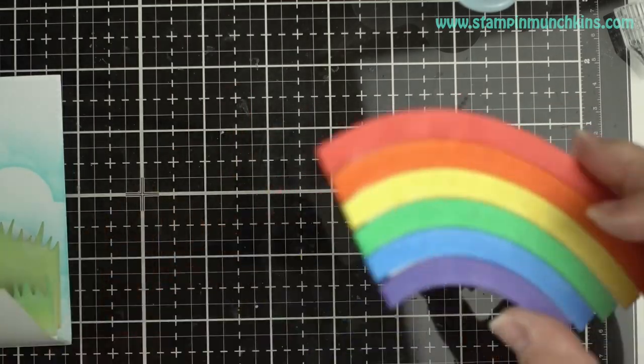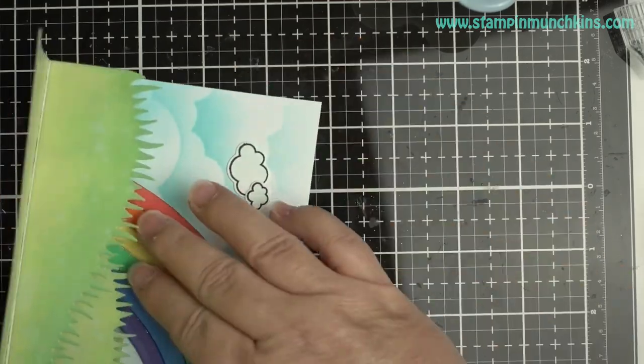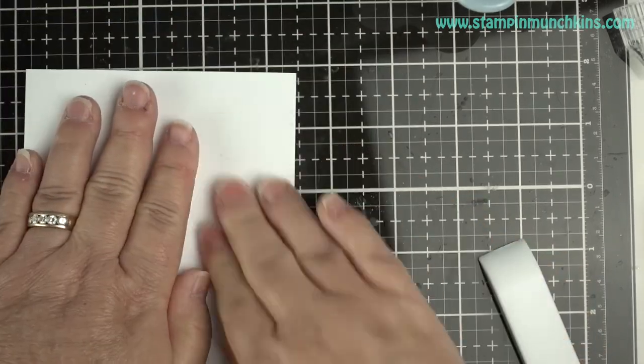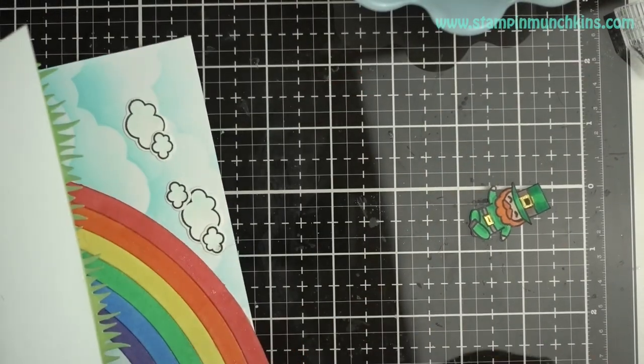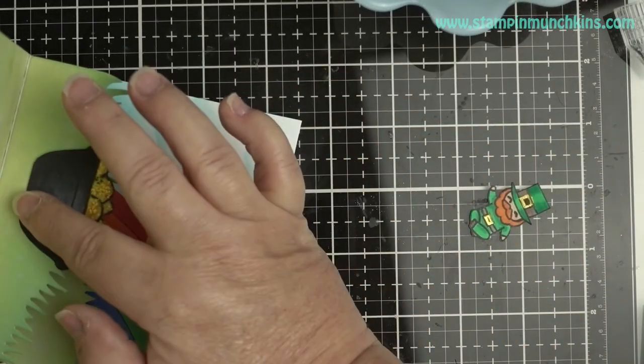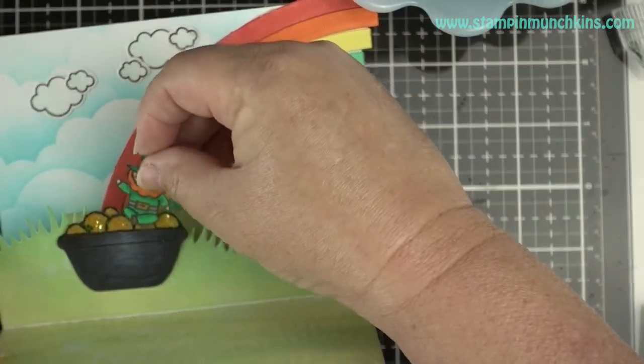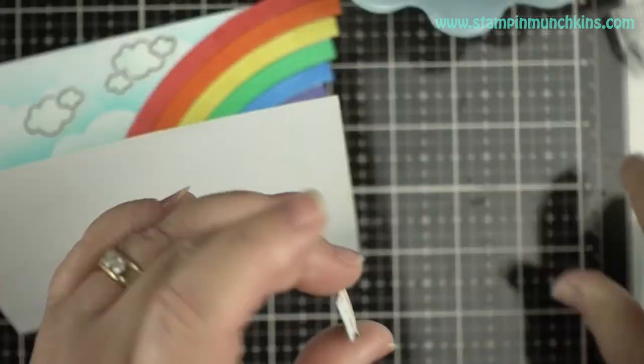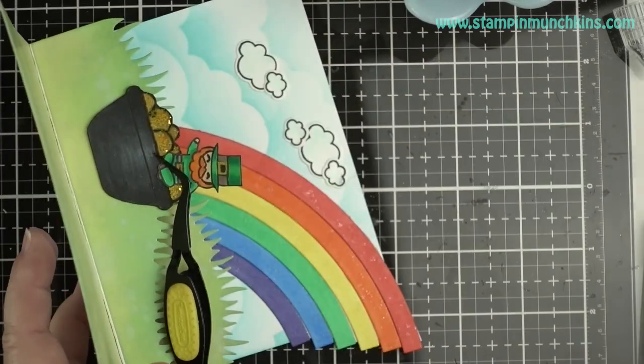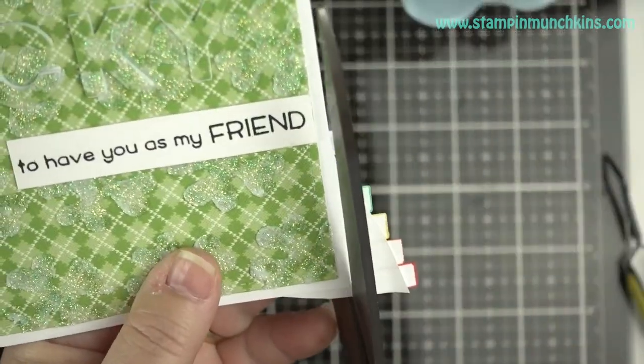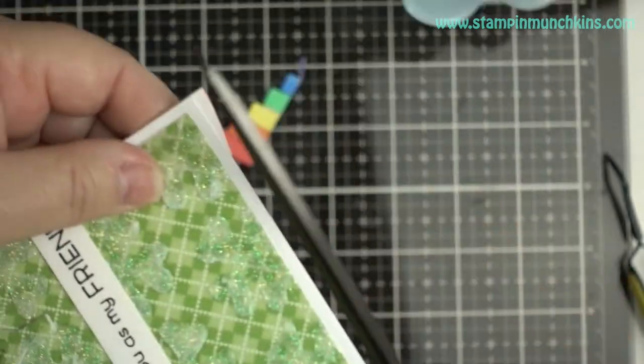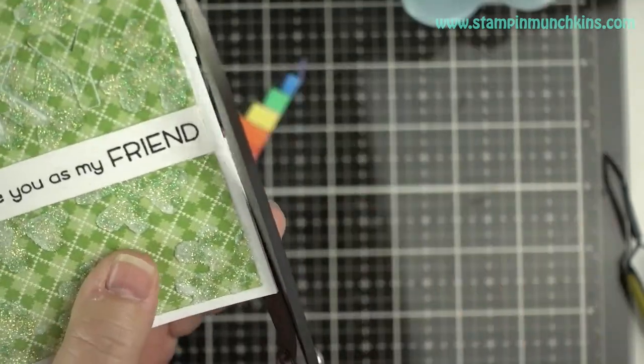And there it is, perfect. There's big clouds on the background and puffy clouds on top. Now I'm just putting the rainbow where I want it to go - it doesn't have to go all the way down. I'm putting my Teflon bone folder in there to make sure it has good contact to the back of the panel. I didn't show but I put Stickles on the gold coins so they sparkle more. This cute leprechaun is sitting on top of his pot of gold. It's like he slid down the rainbow, so he's kind of askew.